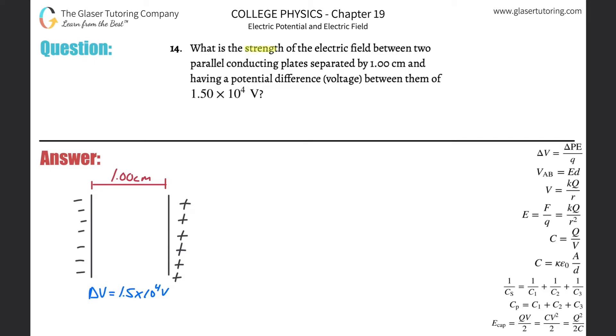Number 14, what is the strength of the electric field between two parallel conducting plates separated by one centimeter and having a potential difference, aka voltage, between them of 1.5 times 10 to the 4 volts?